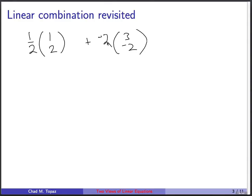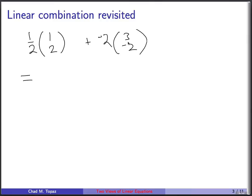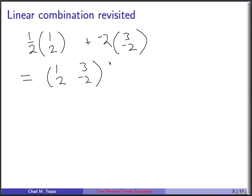What you can do is express this linear combination using a matrix vector product. The first thing you do is construct a matrix that just has your two vectors in it — so [1, 2] is the first column, [3, -2] is the second column. Then next to it you write a vector containing the scalar multiples. The scalar multiple for [1, 2] is one half, and the scalar multiple for [3, -2] is negative two.